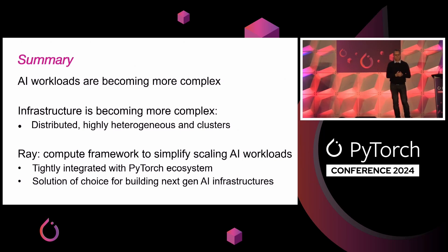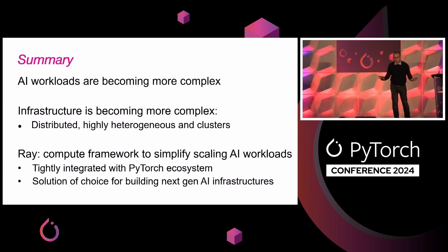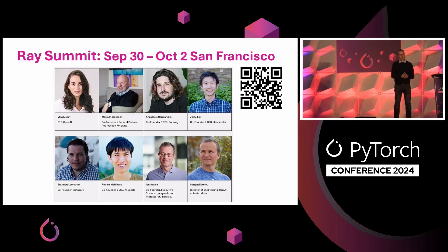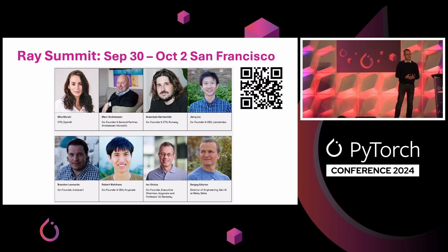In summary, AI workloads are becoming more and more complex. At the same time, the infrastructure is becoming more complex — it used to be only distributed, which was complex enough, but now it's very heterogeneous and distributed. The main goal of Ray is to tame this complexity by significantly simplifying scaling AI workloads on these complex infrastructures. Finally, within less than two weeks, we have the Ray Summit here in San Francisco. We have a great lineup of speakers, so if you are interested in Ray or just curious, please join us at the Ray Summit. Thank you.